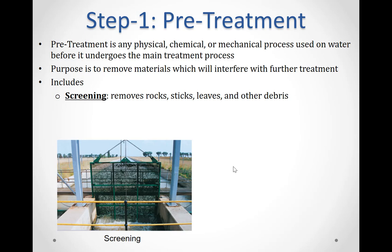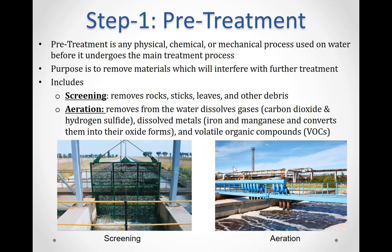Screening stops any large debris from traveling into the intake pipe using coarse filters and bars. Aeration is a treatment step that removes dissolved gases such as carbon dioxide and hydrogen sulfide, as well as dissolved metals such as iron and manganese, converting these dissolved metals into their oxide form. Pretreatment can also remove volatile organic compounds, or VOCs.